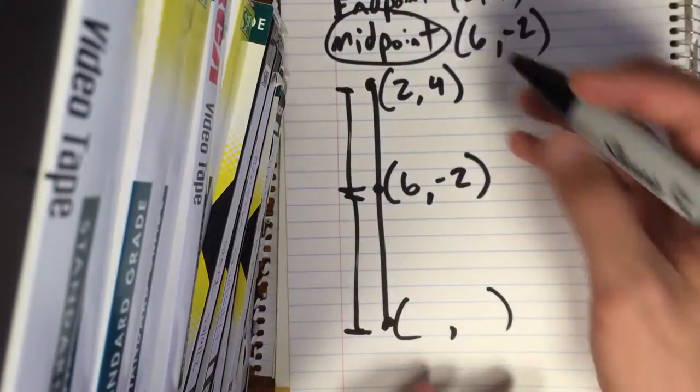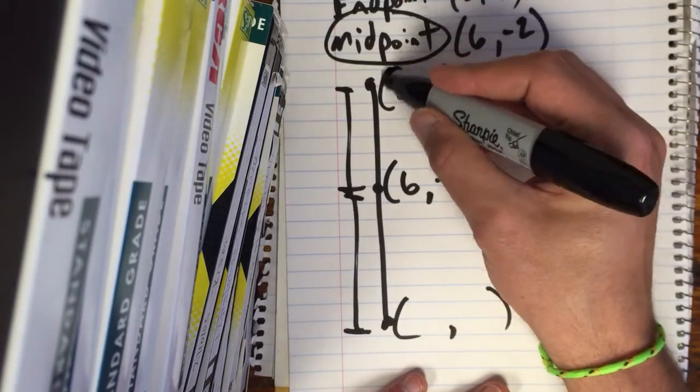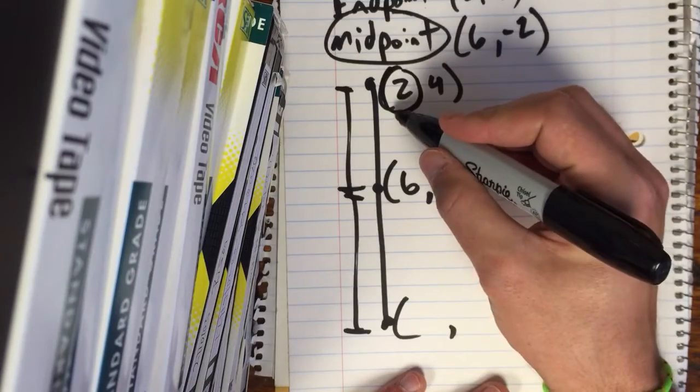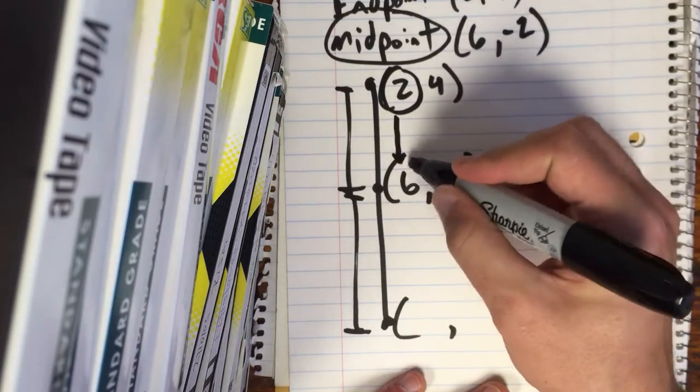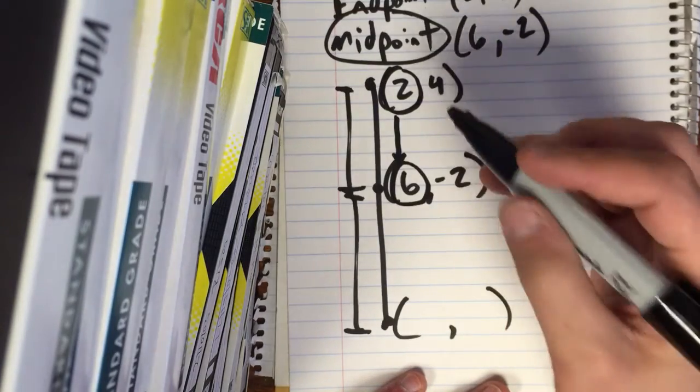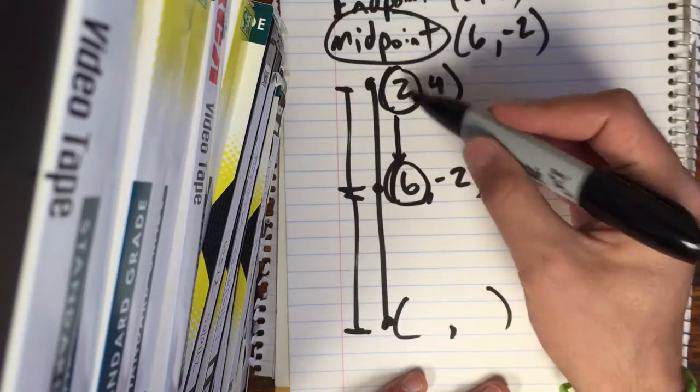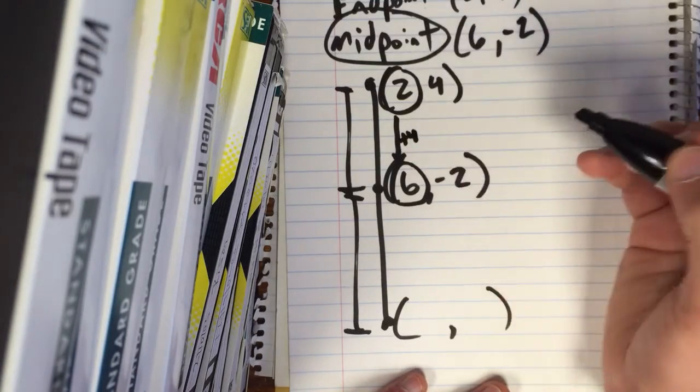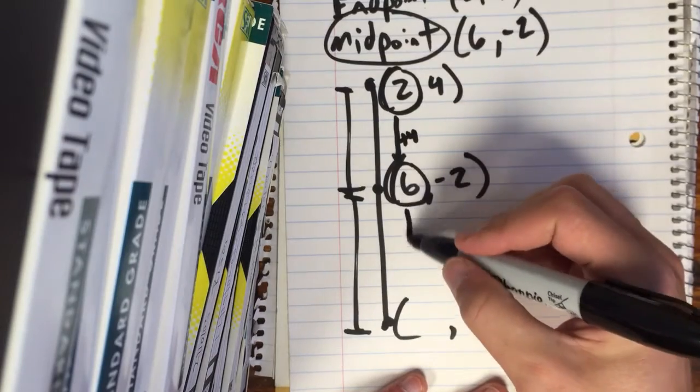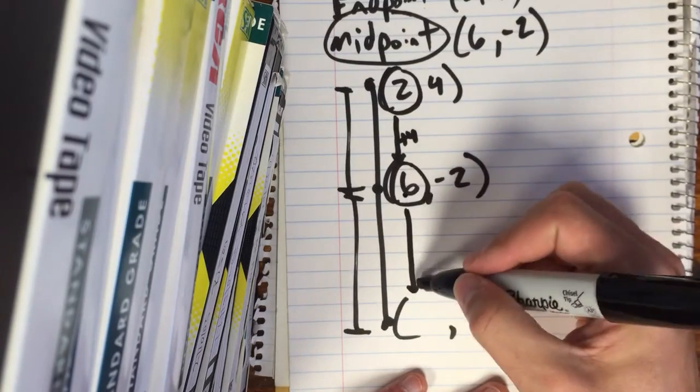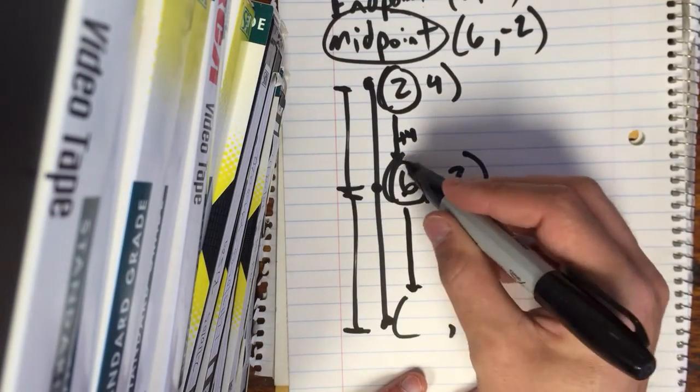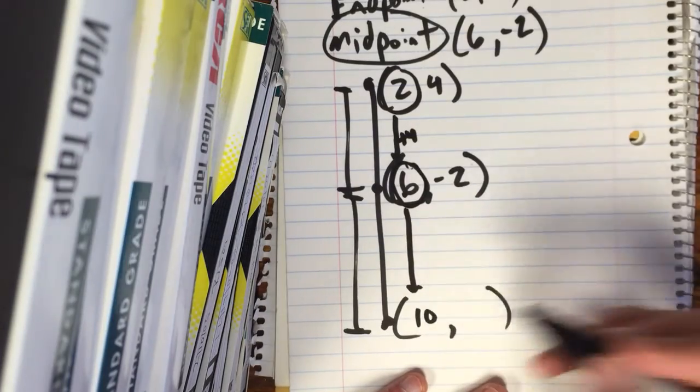So what you do is you take from this first x and then you go to the x at the midpoint—what has changed? What do you do to go from 2 to 6? You add 4, correct? So that's gonna be the same change you make from here to here. Add 4 to our 6 and it is 10.